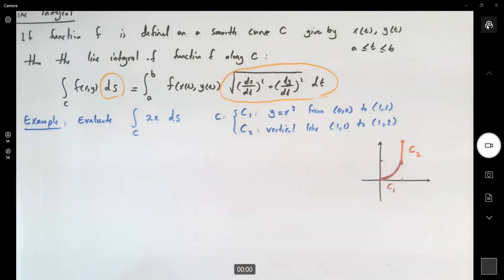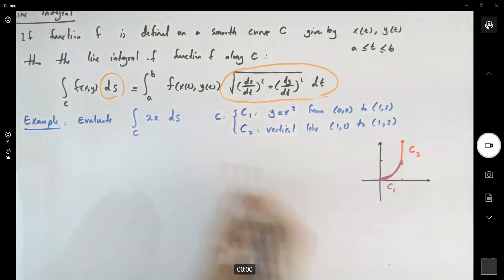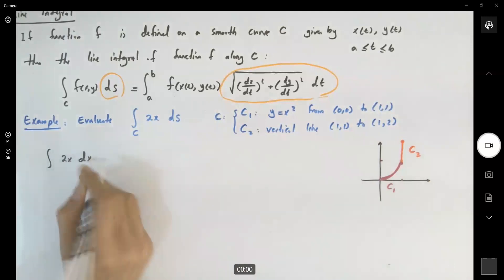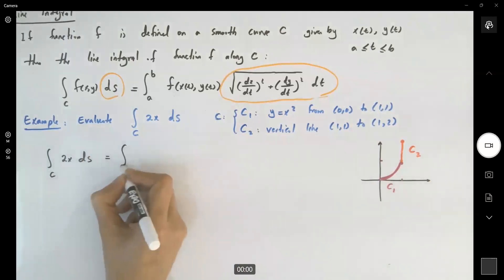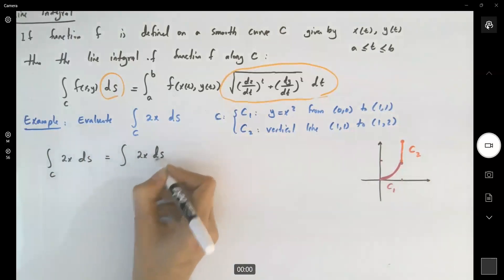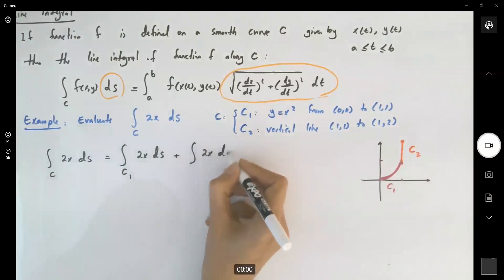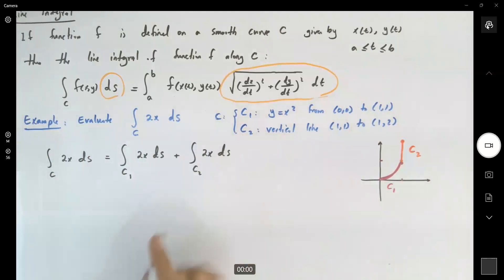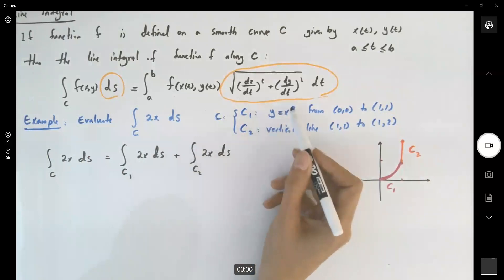Step by step: the integral of 2x ds over curve C can be divided up into the integral of 2x ds over C1, plus the integral of 2x ds over C2. We'll calculate each one of these separately. On C1, you have a relation between x and y.